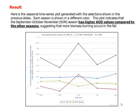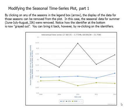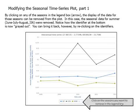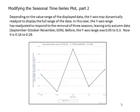This suggests that more biomass burning occurs in the fall. By clicking on any of the seasons in the legend box, the display of data for those seasons can be removed from the plot. In this case, the seasonal data for summer June-July-August (JJA) were removed. Notice how the identifier at the bottom is now grayed out. You can bring it back by clicking on the identifier again.